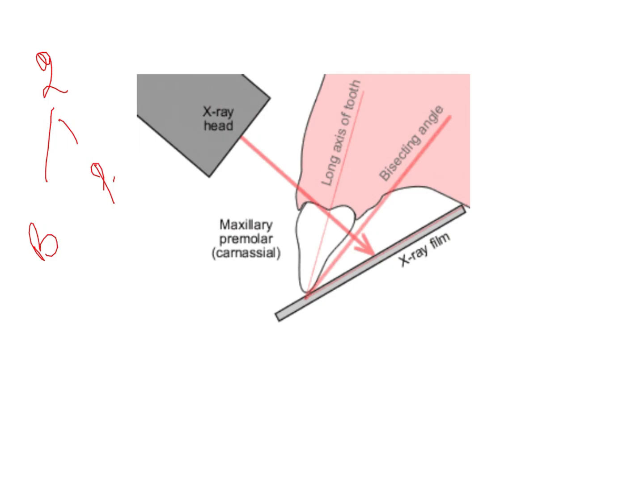In the paralleling technique, your film is completely parallel to the long axis of the tooth. Whatever angulation your tooth is in, the film is placed exactly parallel to it, and the X-rays pass through the tooth onto the film. If this is the long axis of the tooth, the X-ray passes perpendicular to both the tooth and the film.